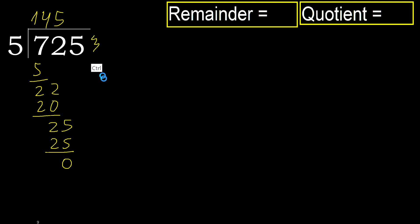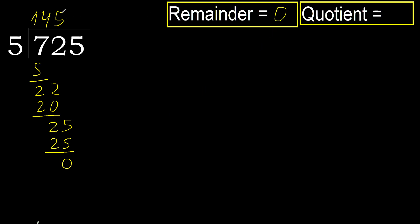That is not a number, therefore finish it. 725 divided by 5 is 145.